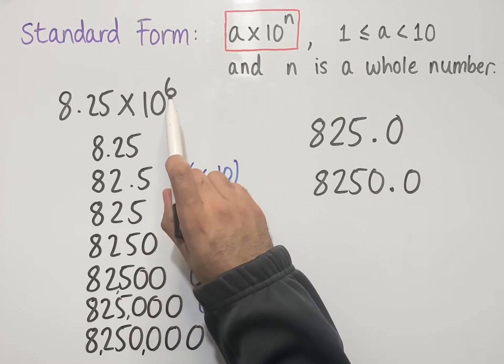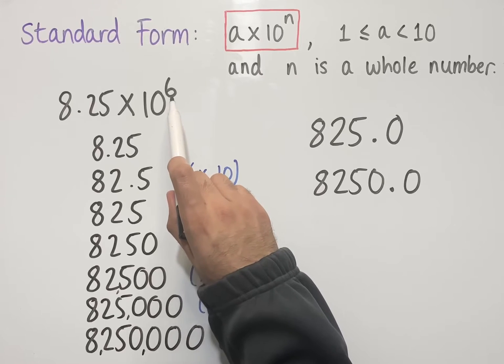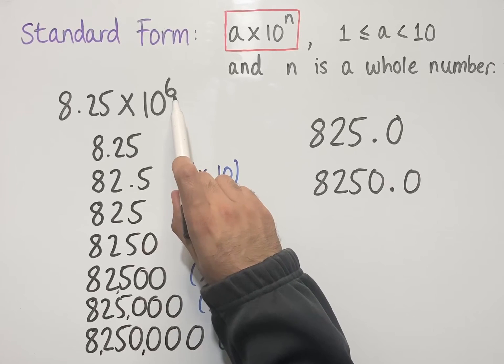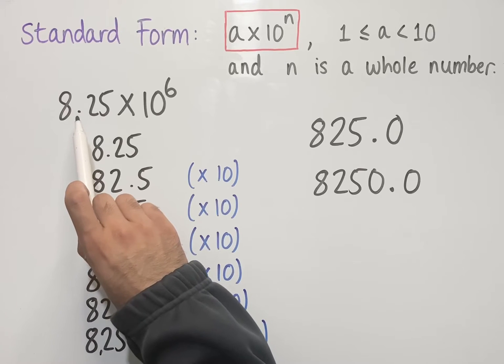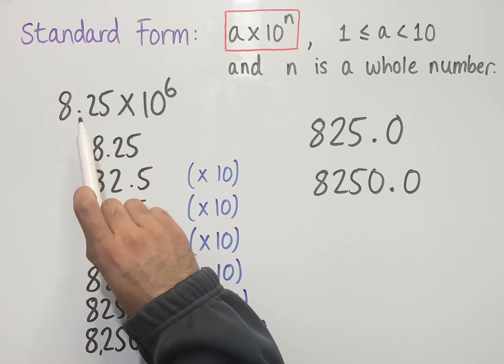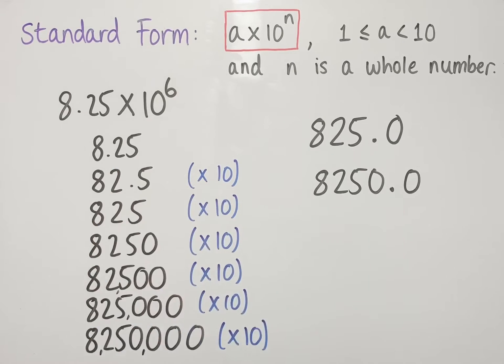If our power of 10 is a positive number, then we're essentially moving the decimal point to the right by that number of spaces.